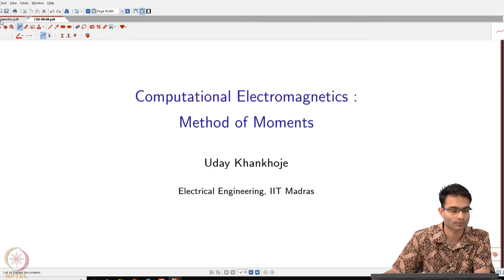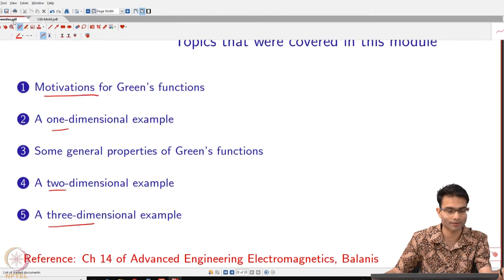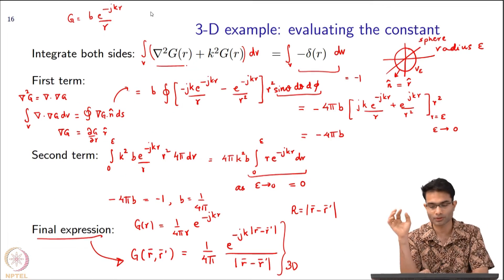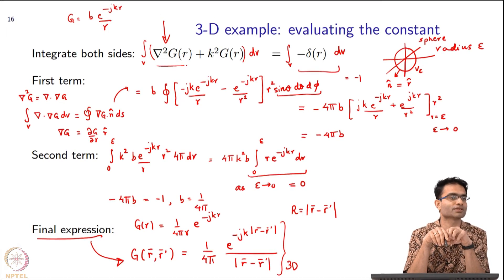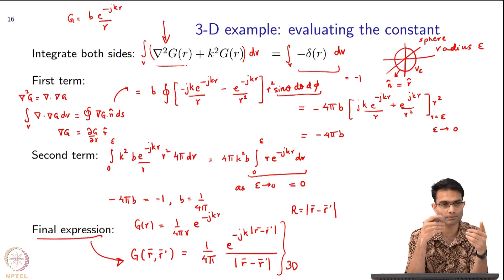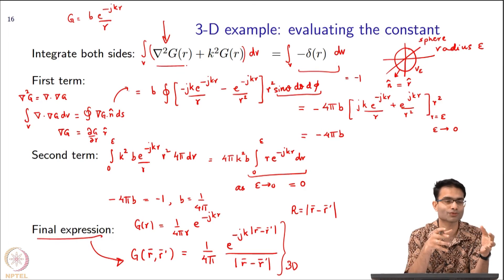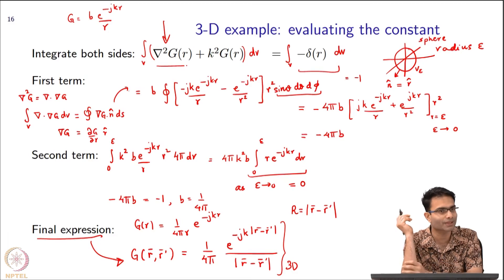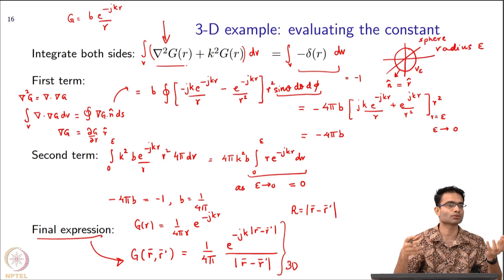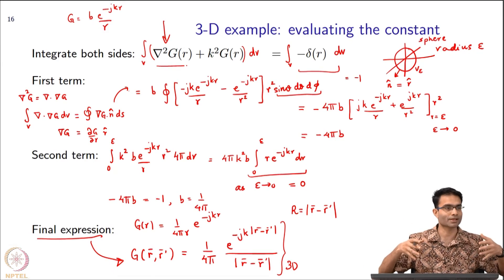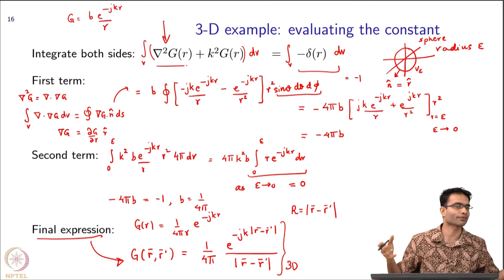Why does the functional form change in 1D, 2D, and 3D? Mathematically, the reason is that del squared changes its form each time. In 1D it is just the second derivative with respect to x. In 3D we get the (1/r) and (1/r²) terms. That is what changes the mathematical form of the equation itself, and therefore changes the final result.